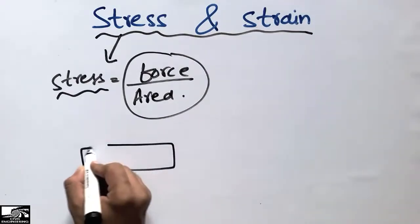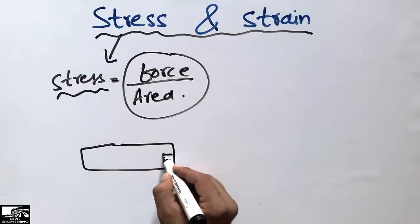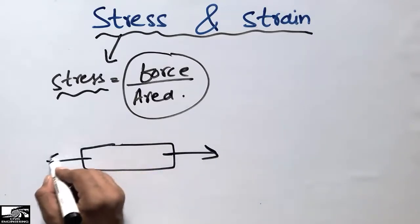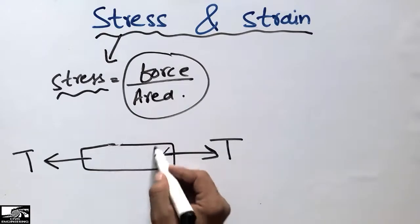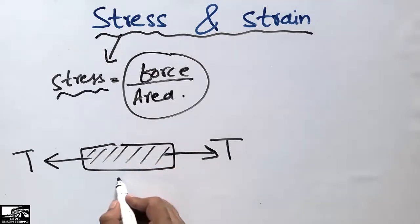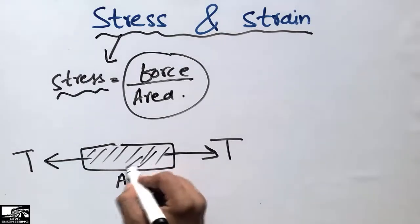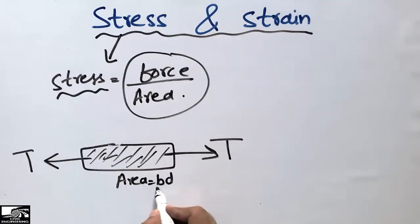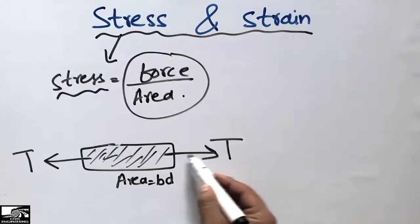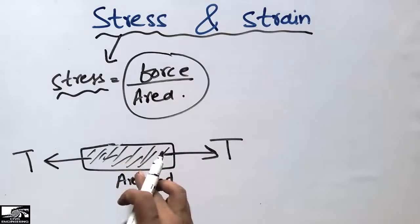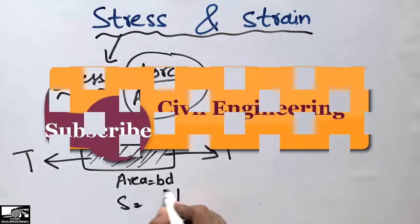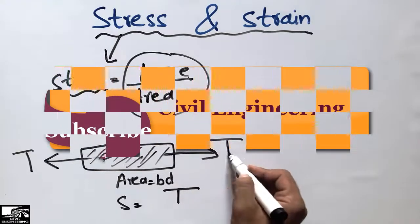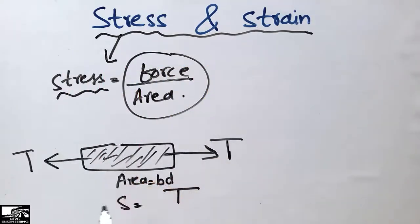For example, consider a rectangular object. When a force is acting on this object in the outward direction, these are tensile forces T acting outward. The area of the object — let's say B into D, width and depth of the section — is used to calculate the stress. The tension stress equals the tensile force divided by the unit area B into D.